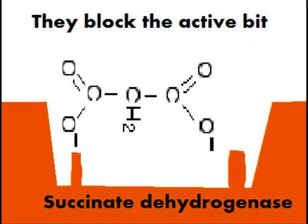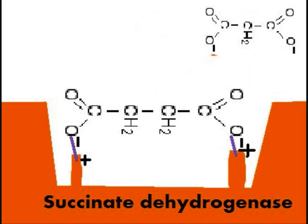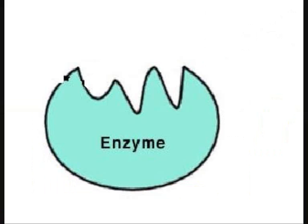Malonate ions block the active site, but even though it's similar, it doesn't quite fit. The reaction isn't over, as I shall explain — malonate can leave, and the substrate react again.